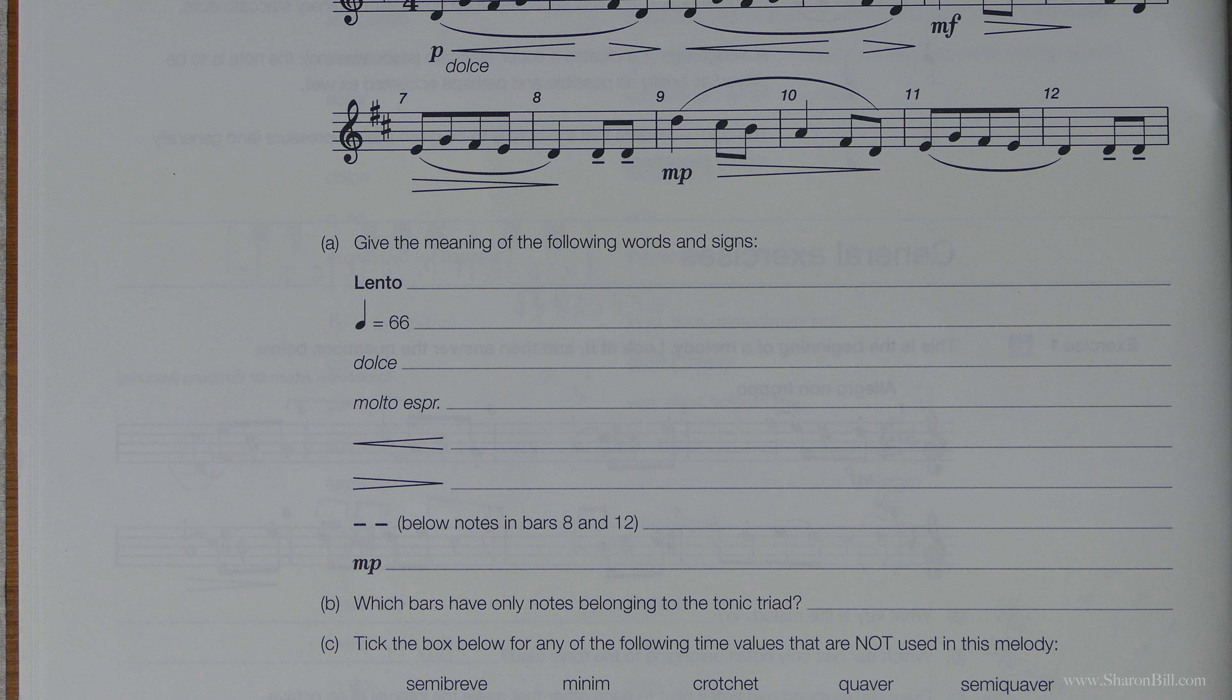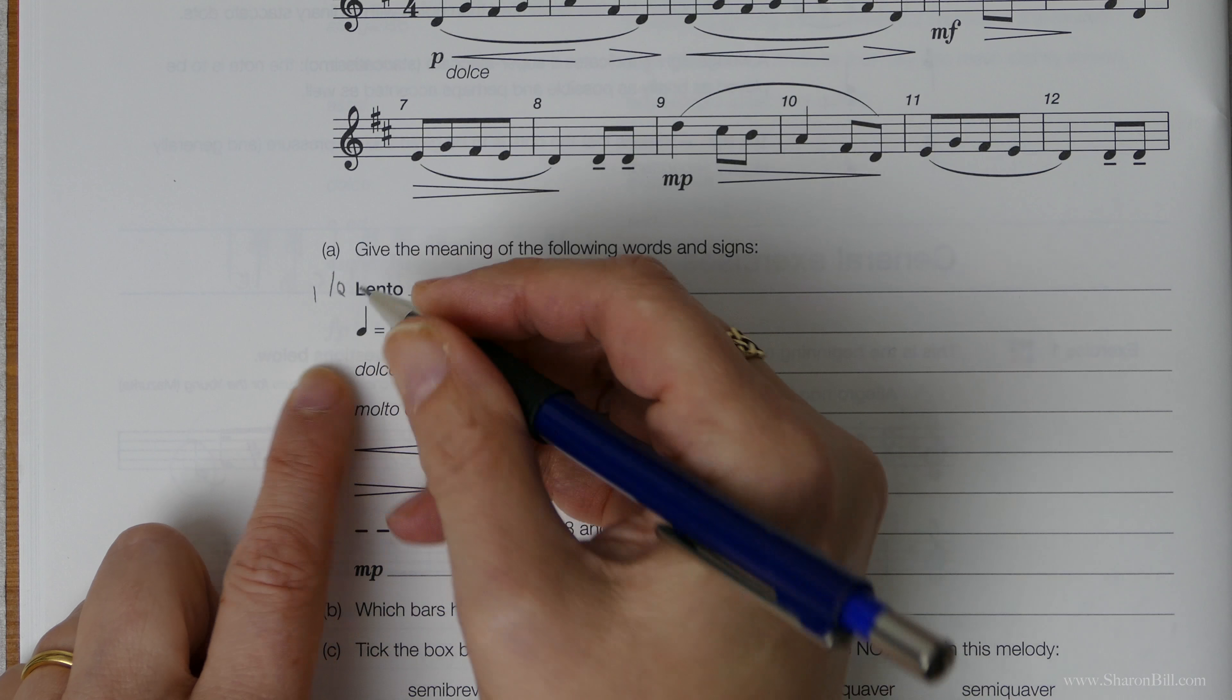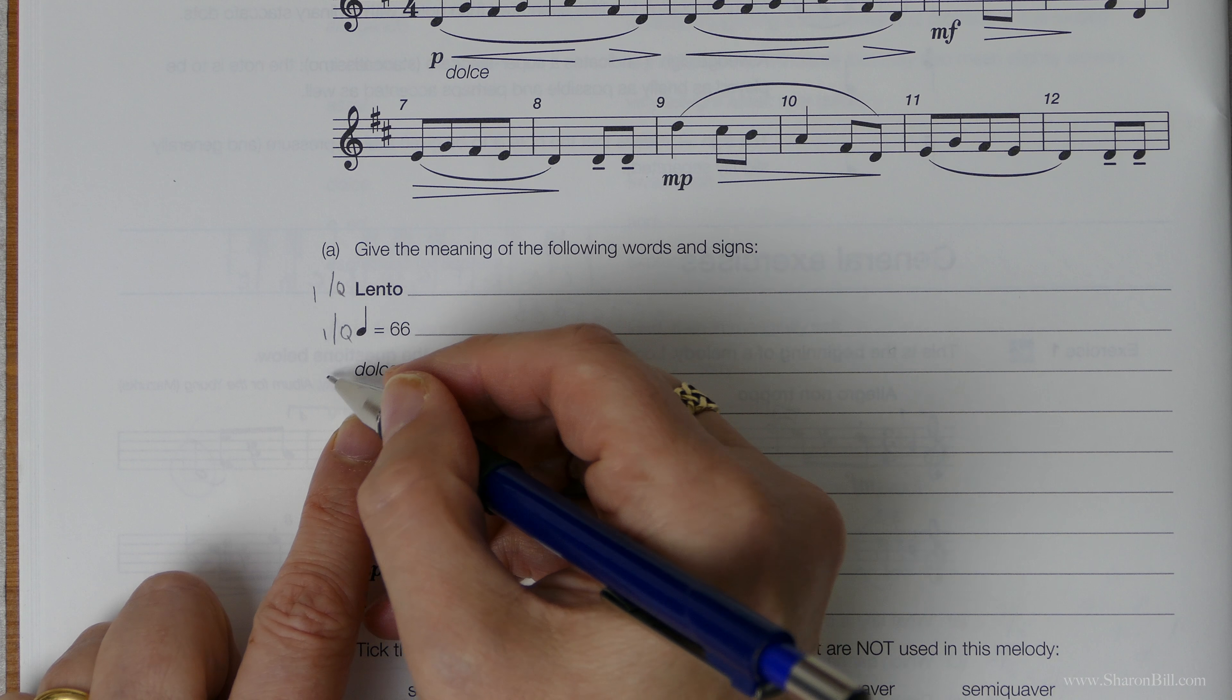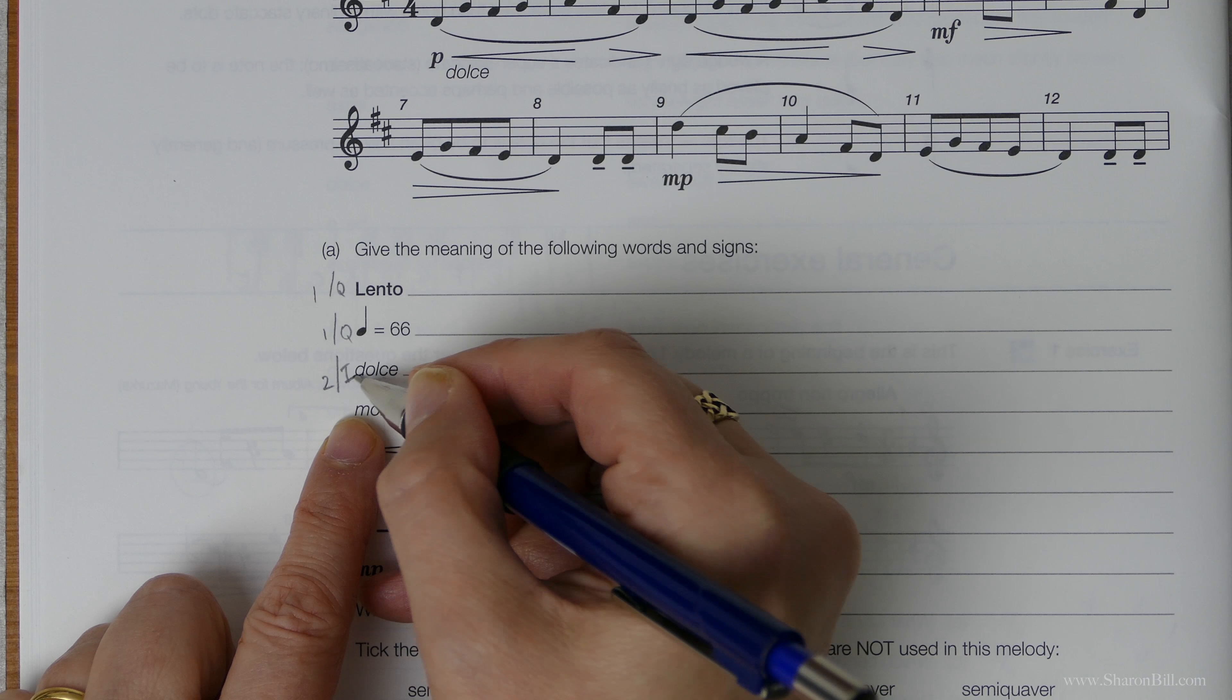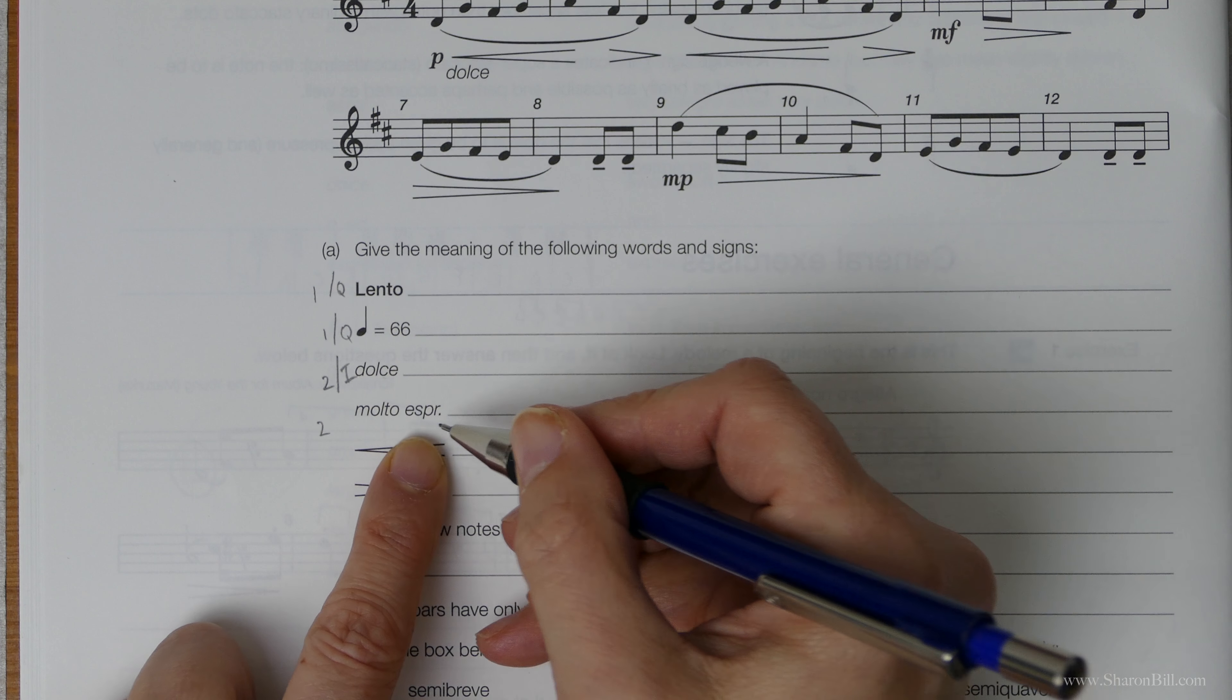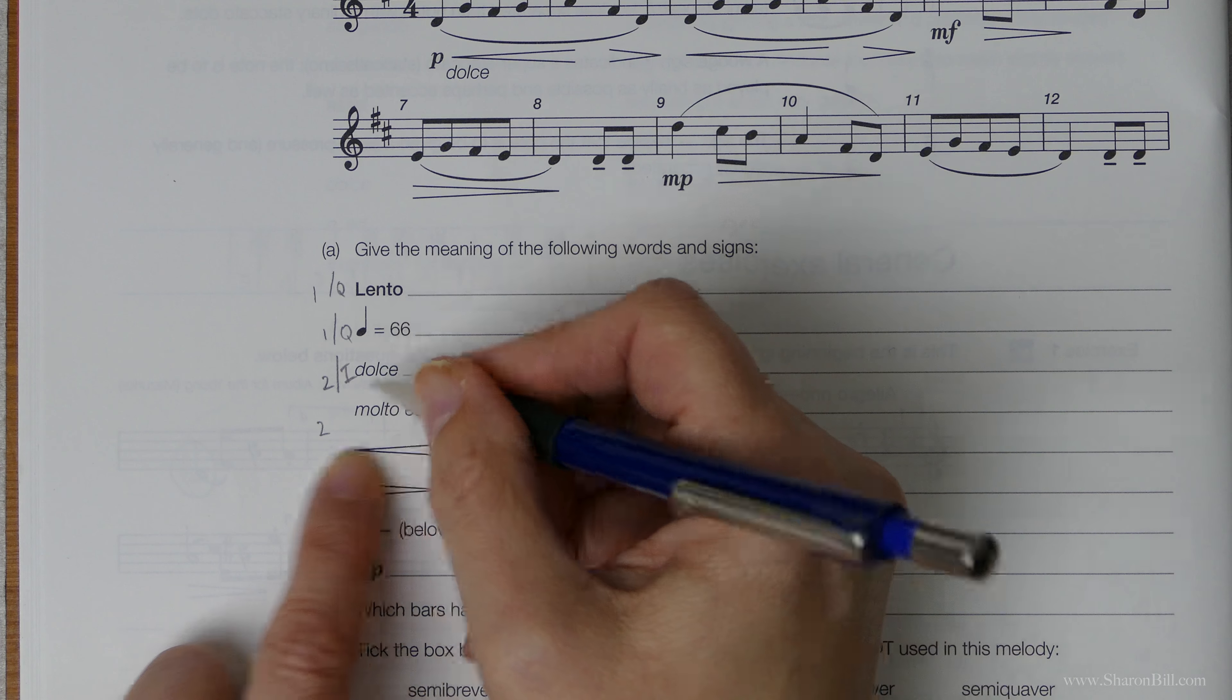Give the meaning of the following words and signs. So lento you will find in grade 1 section Q. You will also find the explanation for this here in section Q. This word here, dolce, you will find in grade 2 section I. Also you will find this, molto espressivo, there. It's an abbreviation here.